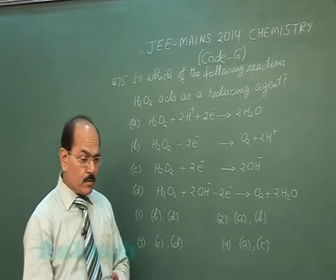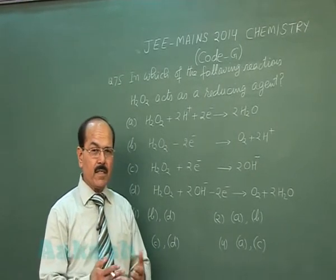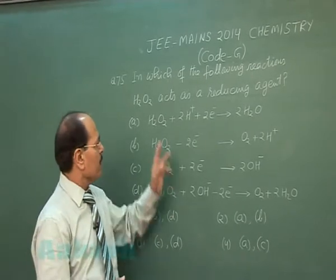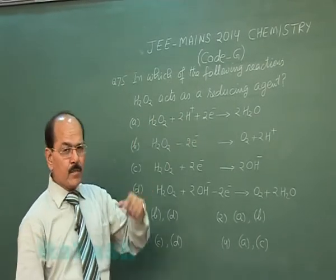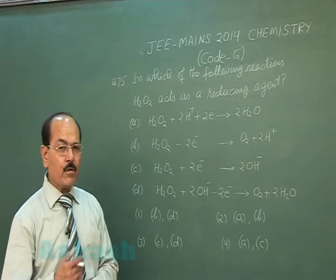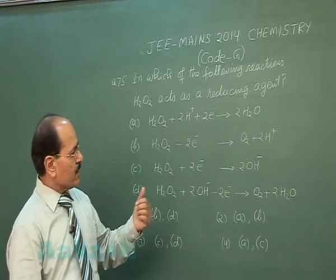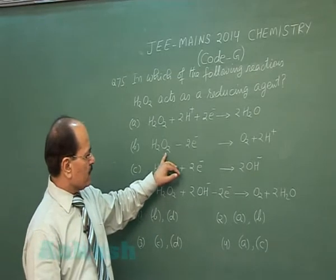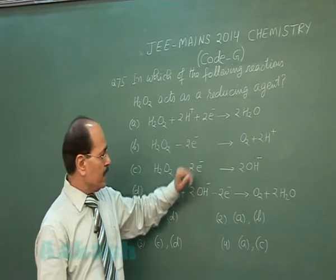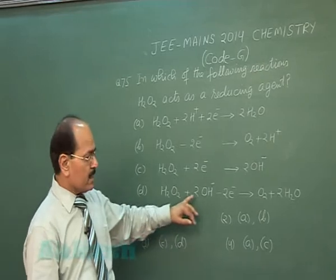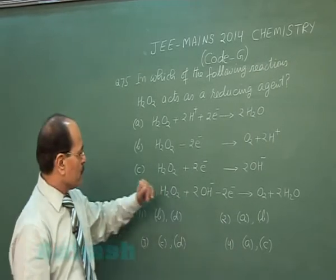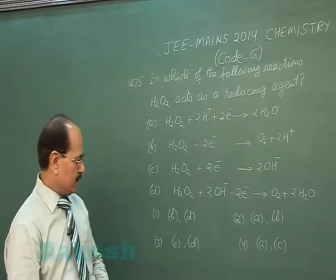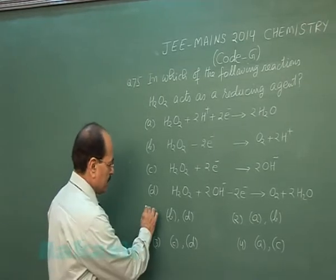Gain of electrons is reduction and loss of electrons is oxidation. When H₂O₂ acts as a reducing agent, it gets oxidized, meaning it loses electrons. H₂O₂ loses electrons in reactions B and D. So the option containing B and D is the right answer — option 1 is correct.